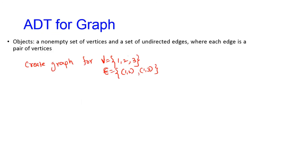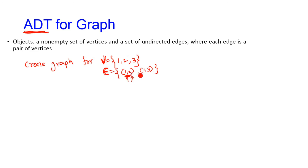Next is the abstract data type representation for the graph. ADT is a kind of abstract data type where you represent in abstract form whatever basic operations you will perform on the graph. The object is a non-empty set of vertices and a set of undirected edges, where each edge is a pair of vertices. For example, given a set of vertices 1, 2, 3 and a set of edges 1-2 and 1-3, an edge is represented by the names of the two vertices between which it exists. This is what we draw for an undirected graph.